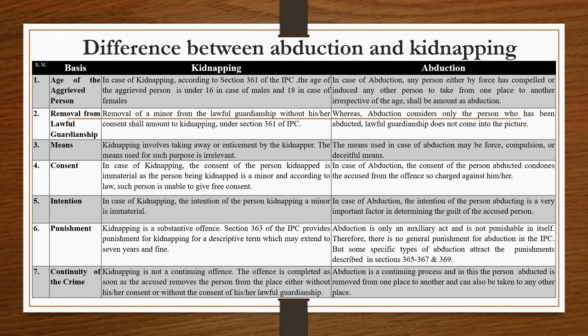The last difference is continuity of the crime. Kidnapping is not a continuing offense — the offense is completed as soon as the accused removes the person from the place, either without his or her consent or without the consent of the lawful guardian. Whereas abduction is a continuing process — the person abducted is removed from one place to another and can also be taken to any other place, so it is a continuing process.